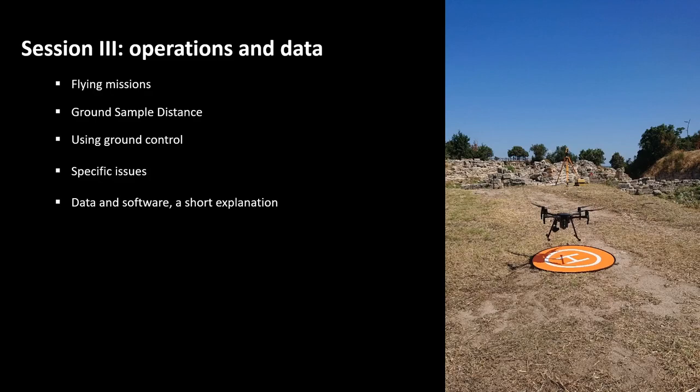With that, I've come to the end of session 3 on operations and data. I've been talking about how to fly a mission, the concept of ground sample distance, using ground control, specific drone sensor data issues, and a short explanation of data and software — what you can do with what comes out of the sensor. Thank you for watching.